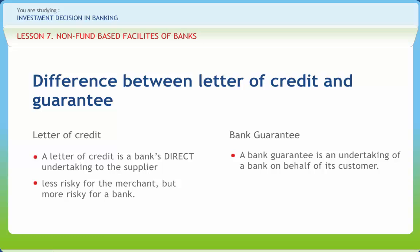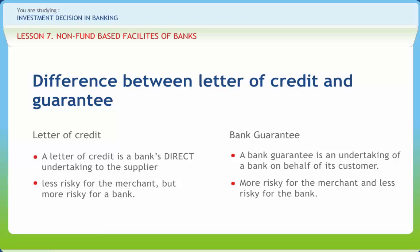A bank guarantee is therefore a type of contingent guarantee, making it more risky for the merchant and less risky for the bank. This is not the case with a letter of credit. With a bank guarantee, if a client defaults, the bank assumes liability; with a letter of credit, liability rests solely with the issuing bank, which must then collect the money from its client. The principal character of an LC is that it is a potential claim against the bank rather than the bank's client — an LC substitutes the bank's credit for its client's. The seller's risk is mitigated from the risk that the buyer will not pay to the risk that the bank will be unable to pay, which is unlikely. A letter of credit is thus less risky for the merchant but more risky for the bank, though banks accept full liability in both cases.